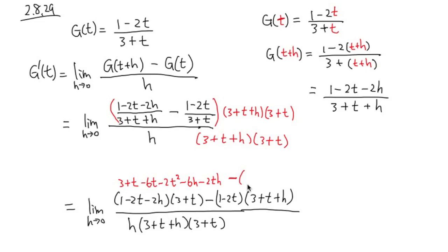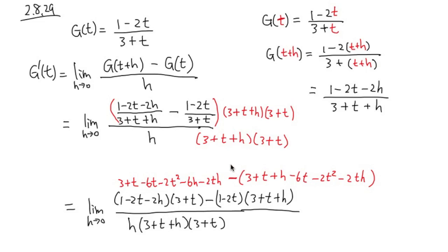For the second part, we expand (1 minus 2t)(3 plus t plus h): 1 times 3 is 3, 1 times t is plus t, 1 times h is plus h, negative 2t times 3 is minus 6t, negative 2t times t is minus 2t squared, and negative 2t times h is minus 2th. Distributing the negative sign into this gives minus 3, minus t, minus h, plus 6t, plus 2t squared, and plus 2th.